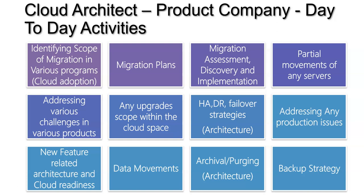Identifying scope of migration in various programs — assume your organization is dealing with multiple programs and projects. You can identify the scope in each program or project: how much of those workloads or what different programs are eligible to move to the cloud. The next activity is migration plans — when you identify a program or project eligible to move to the cloud, you need a variety of plans for making that move.